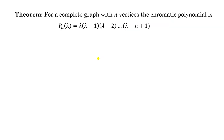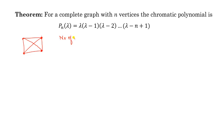Now look at this theorem: for a complete graph with n vertices, the chromatic polynomial is a specific expression. We will directly find this expression. In a complete graph with n vertices, every vertex is adjacent to every other vertex. For example, in a complete graph of four vertices, every vertex is adjacent to every other vertex.